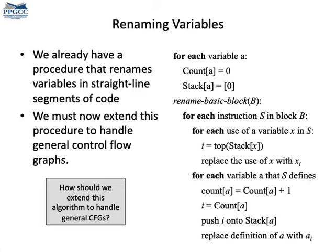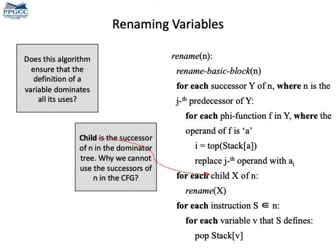Once we have inserted phi functions for the variables, we must rename the variables in the program. The essence of this procedure is that we look at every variable defined in the program, check every use that it dominates, and rename the definition and dominated uses so that they have the same name. The renaming procedure reuses an old algorithm for renaming variables in basic blocks. The rename procedure navigates the program through its dominator tree, invoking the routine to rename variables within basic blocks.